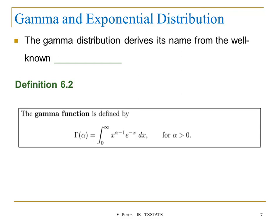The gamma distribution derives its name from the well-known gamma function. This is the gamma function — it's the integral from zero to infinity of an exponential expression. For the purpose of this course, I'm going to show you several continuous distributions, but I'm going to focus the problems and attention on two of them.